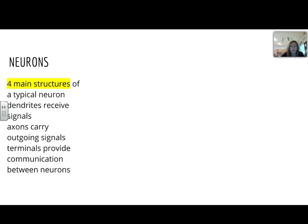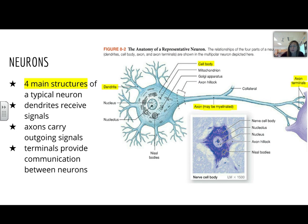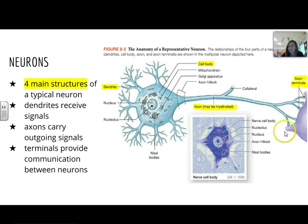There are four main structures of a typical neuron. The dendrites receive the signals, axons will carry outgoing signals, and then the terminals provide communication between other cells, mostly neurons. This is a picture of a representative neuron — this is actually a multipolar type. The cell body is here, we have a dendrite off the cell body, the axon is usually quite long taking those outgoing signals and it could be myelinated, and then we have axon terminals that are going to meet up with some other cell type.